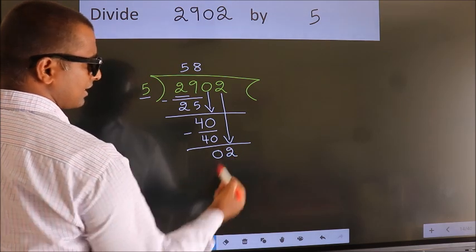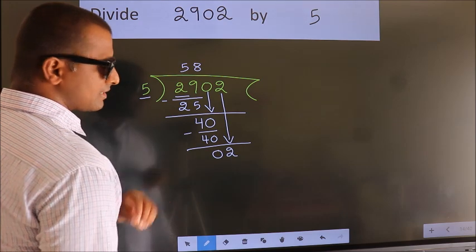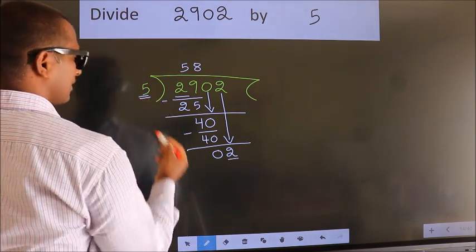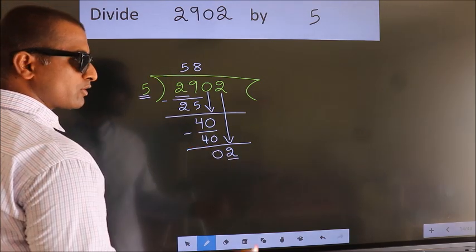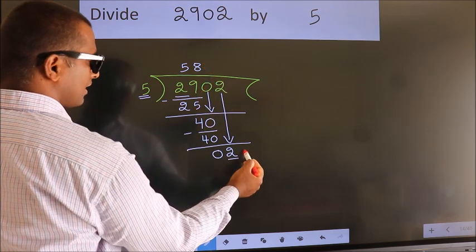After this step, the mistake happens. And the mistake is this: here we have 2, here 5. 2 is smaller than 5. So what many do is they directly put the decimal point and take 0.